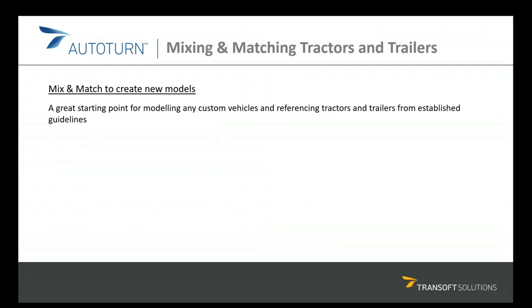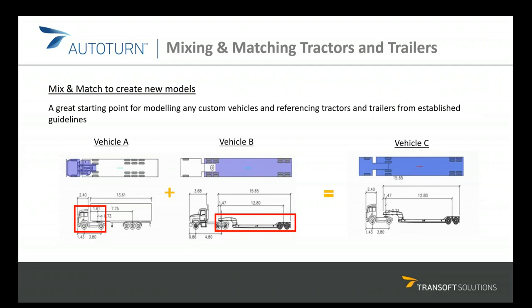To simplify and speed up the creation of custom vehicles, we have developed the ability to create new vehicles by combining parts from existing vehicles in AutoTurn libraries. This tool saves a lot of time when you have to model multiple vehicles where the same trailer units are attached to different trucks or vice versa. For example, if vehicle A has a normal container trailer and you want to swap it for a low boy trailer, you can adopt this method — vehicle B being a low boy trailer from a different library.